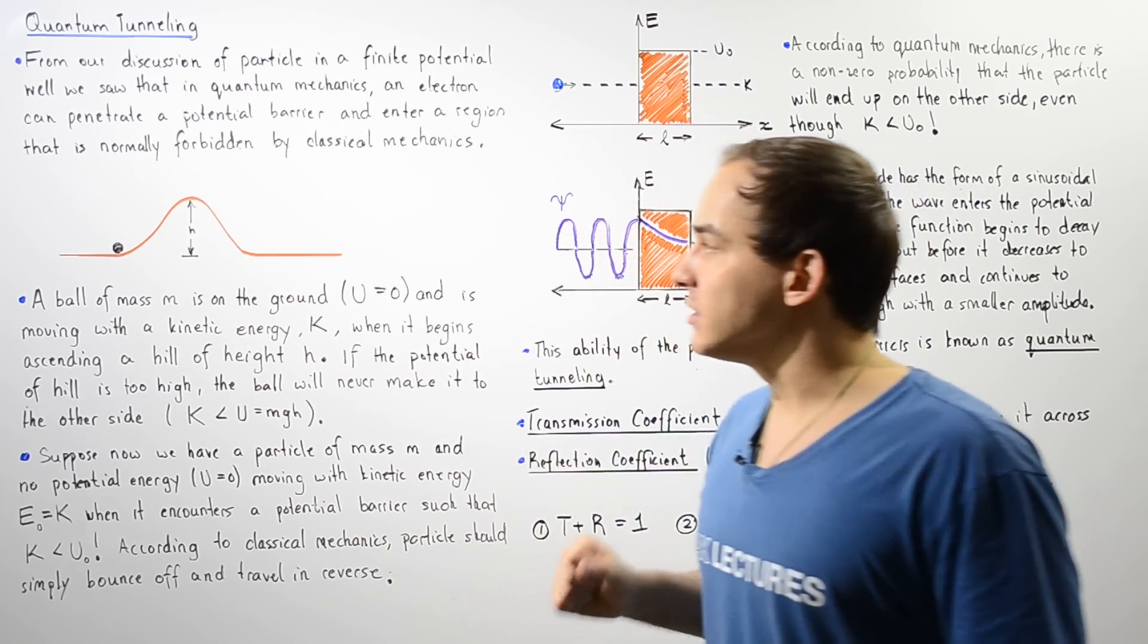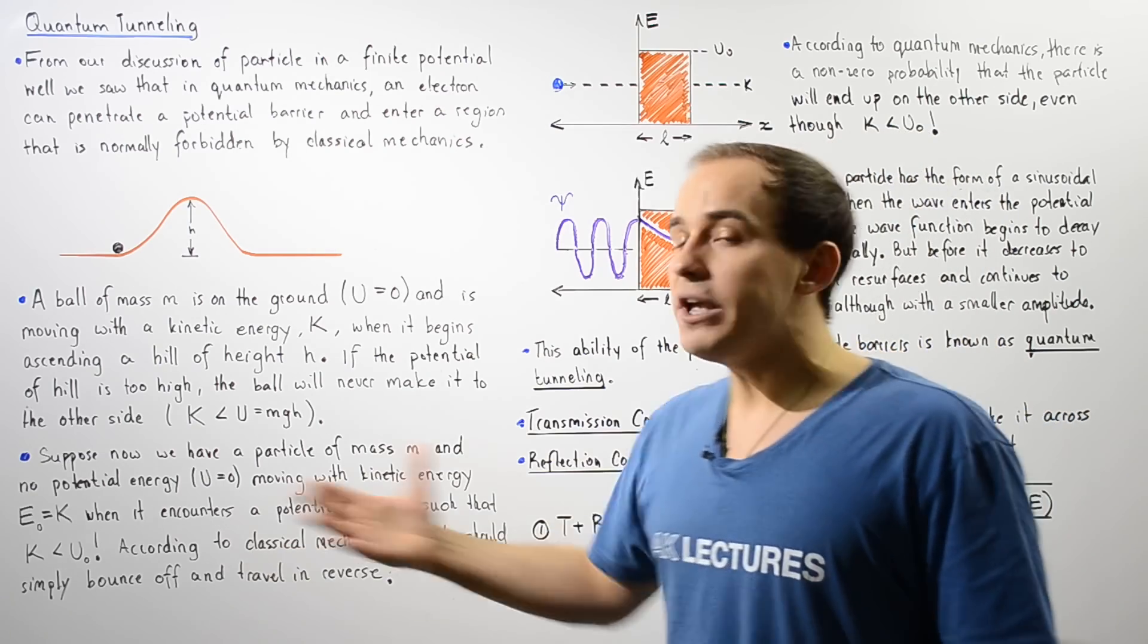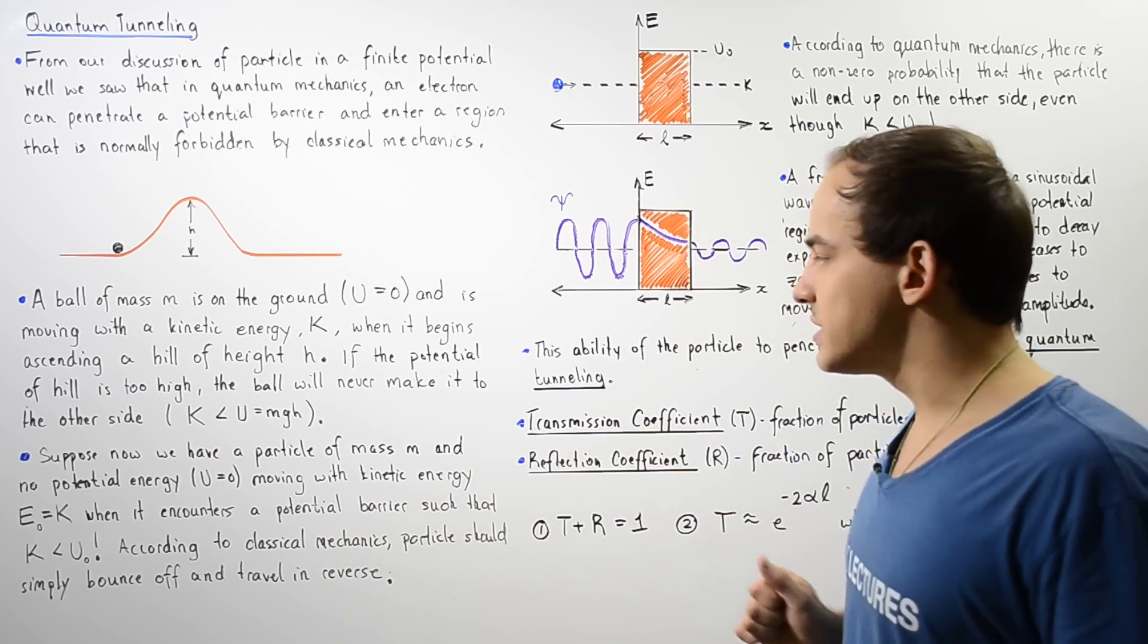On the macroscopic level, we dealt with gravitational potential. On the atomic level, we usually deal with electric potential.